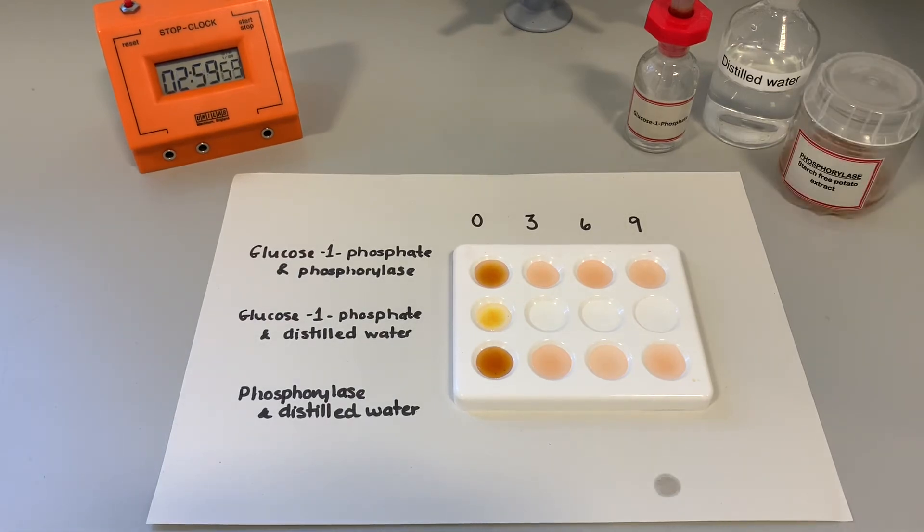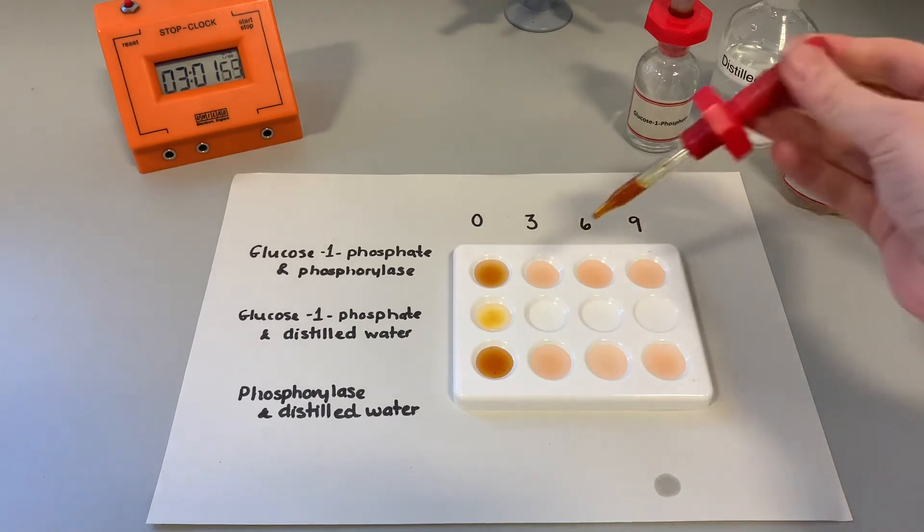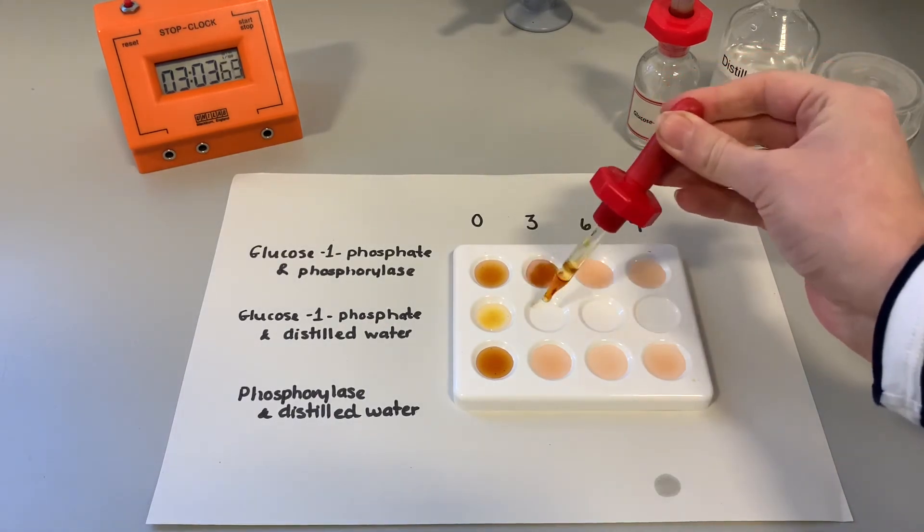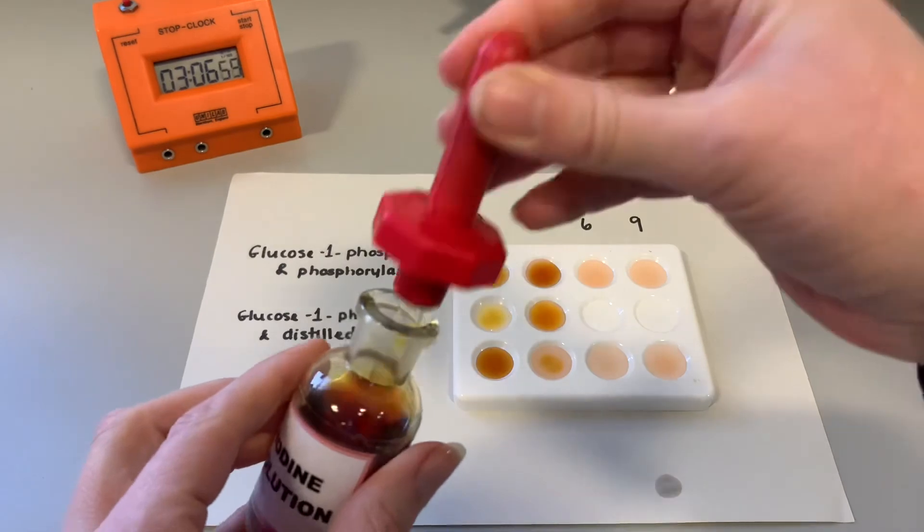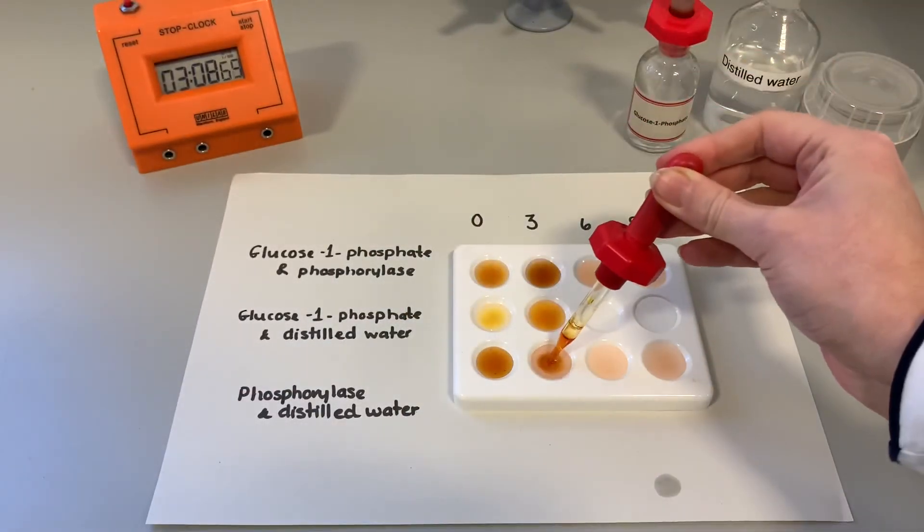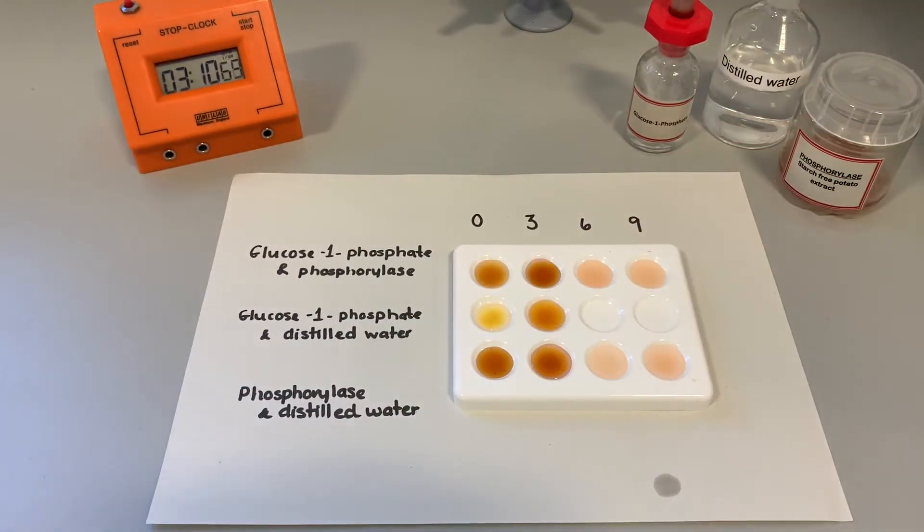So we're getting close to the three-minute mark, so we're going to add some iodine now. And again, that's three minutes. We have got no color change showing that at that point in the reaction, no starch is present.